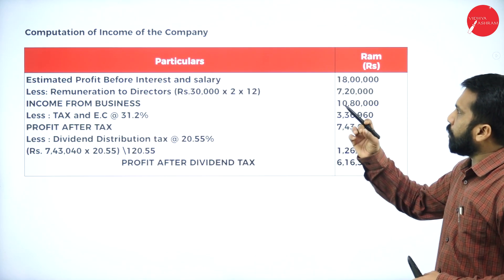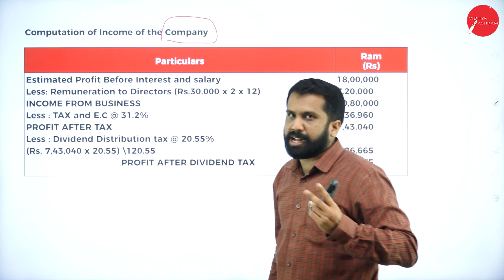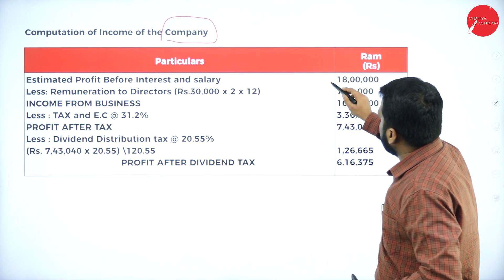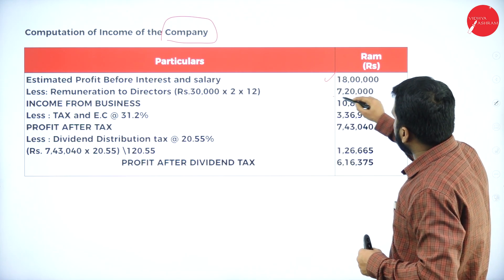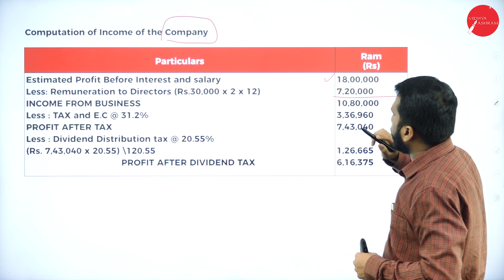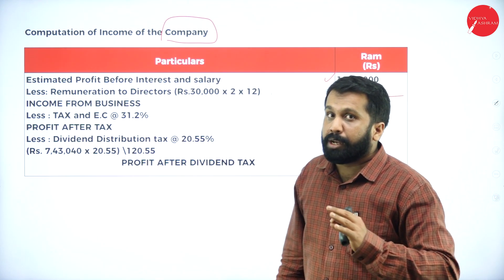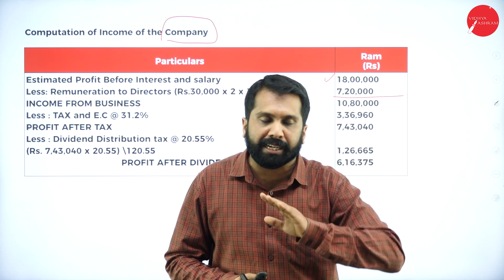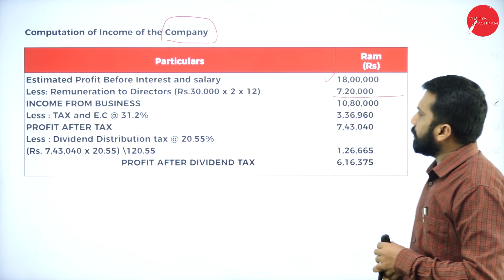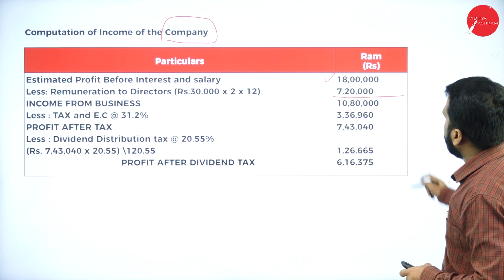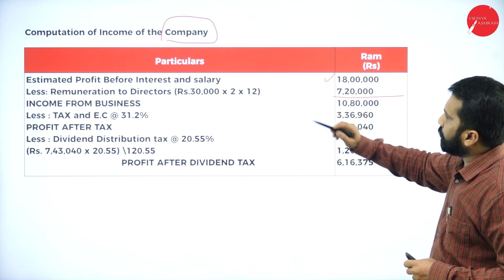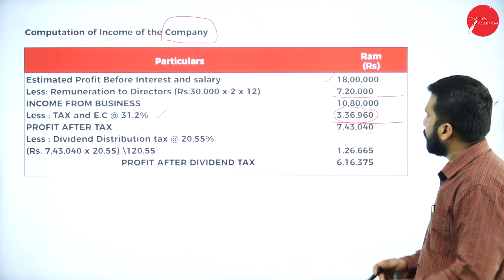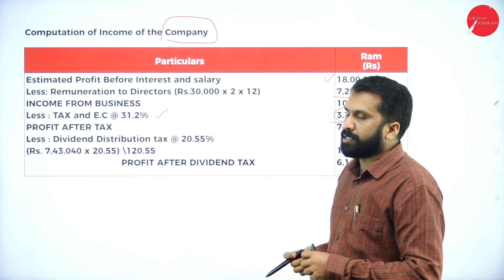Now computing income for the company. Same net profit of 18 lakh minus salary of 7 lakh 20,000 equals 10 lakh 80,000. In the company calculation, we do not compare actual versus standard remuneration, and we do not deduct interest separately. Tax at 31.2% on 10 lakh 80,000 gives approximately 3 lakh 36,960, leaving 7 lakh 43,040.